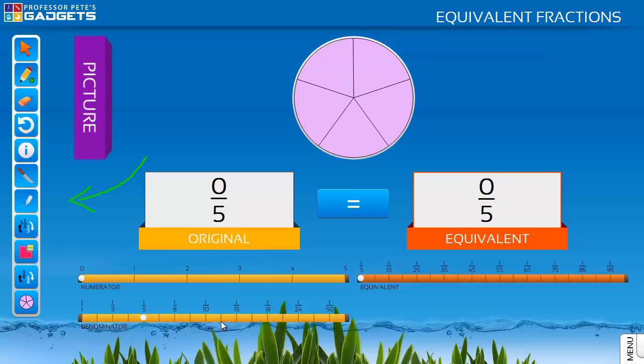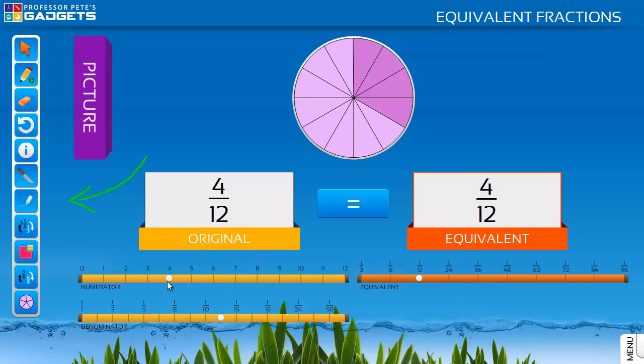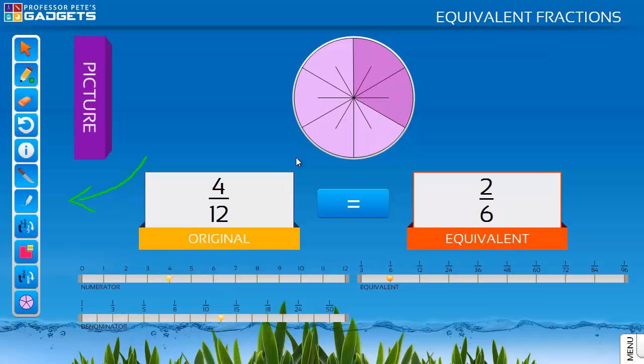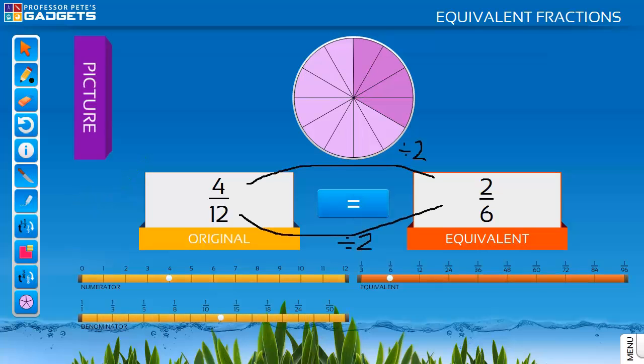Simplify fractions using the glue tool. Click the glue onto the fraction and it will glue the pieces to show an equivalent fraction. Four twelfths can be simplified to two sixths. Use the pen to show the written form of what has happened.